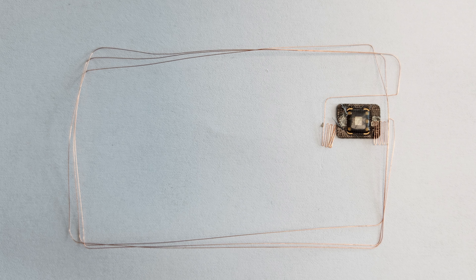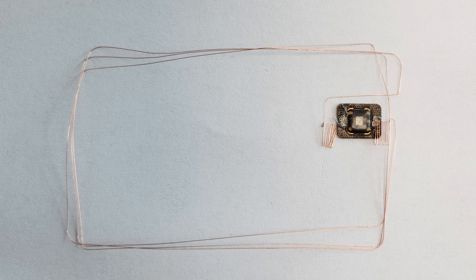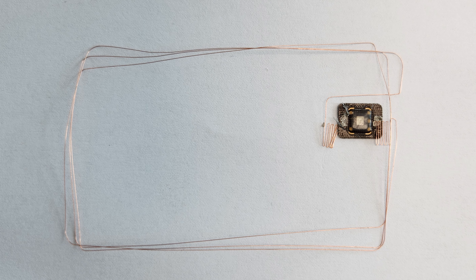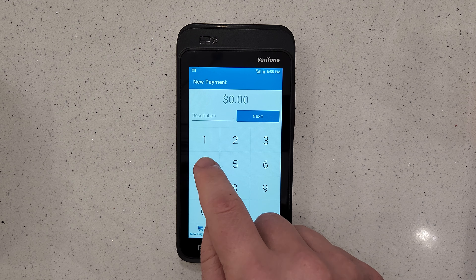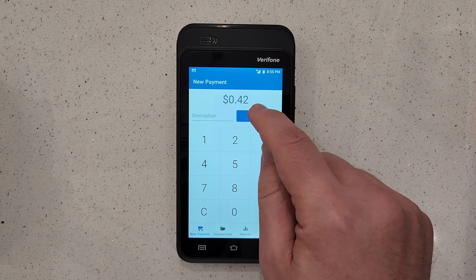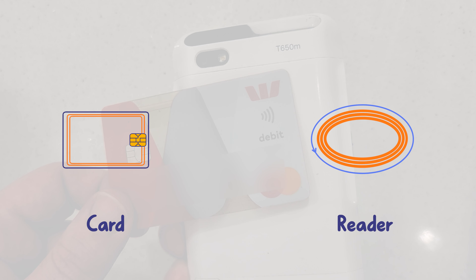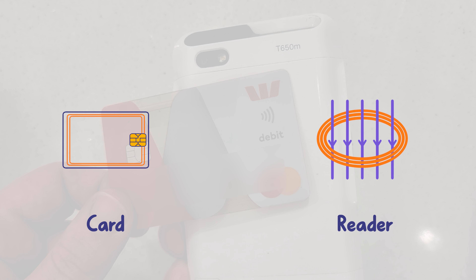Here we see a coil of wire functioning as the card antenna connected to a microchip. When a card reader is set to make a transaction, it produces an alternating current through its coil, generating a changing magnetic field, which induces an electric current within the card's coil that is used to power its microchip.